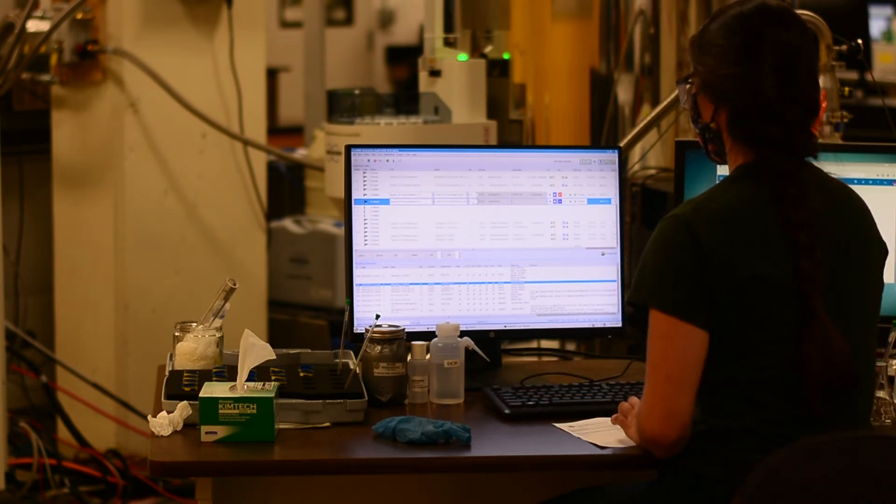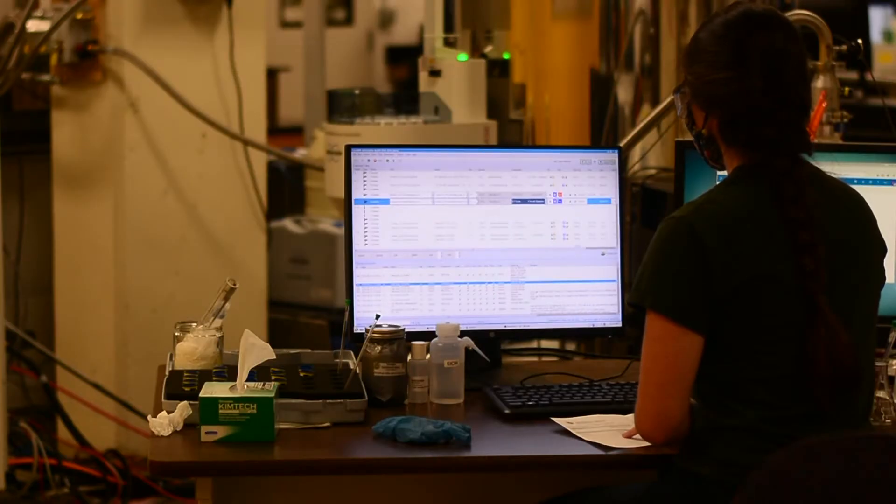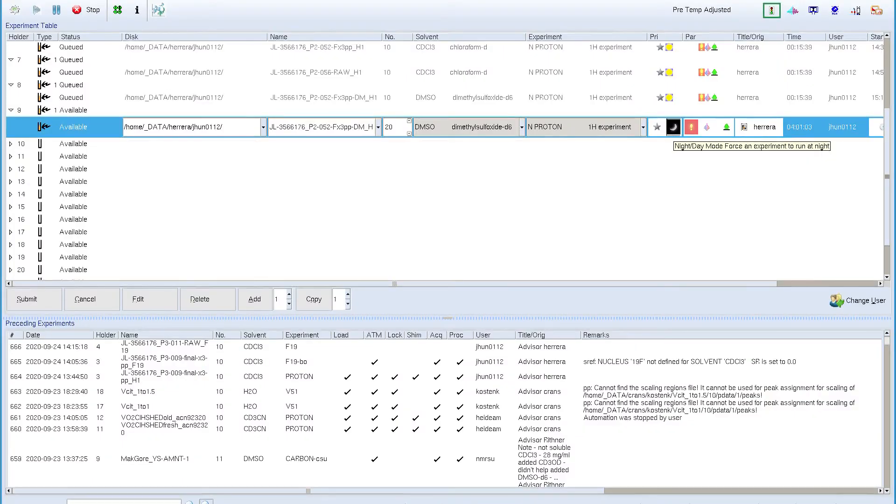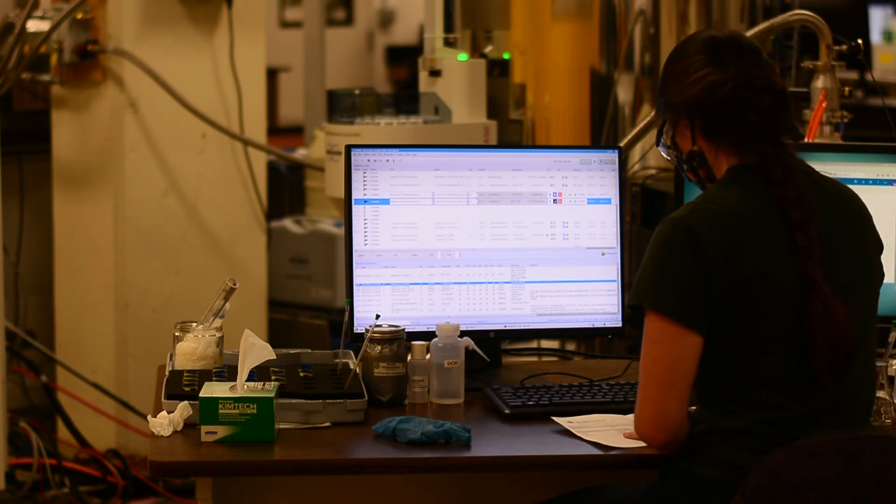If you have a sample that will run for a longer run time than you're allotted during the day, you can shift that sample into the night queue. If you click on the sun it will change to a moon and that will move the sample into the night queue where longer acquisition times are permitted.